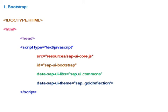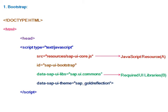Bootstrap. In the bootstrap section, the source which we write inside the script — that is SAPUI core.js — is a JavaScript resource. The SAPUI Commons library which we mentioned is the required UI libraries. And the theme 'Gold Reflection' which we mentioned is the desired page design. So the bootstrap can be seen as three different sections: JavaScript resource, required UI libraries, and desired page design.